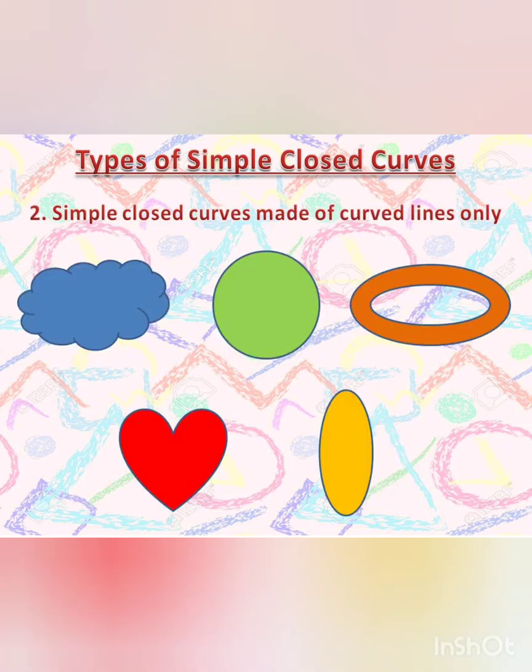Now let's talk about simple closed curves made of curved lines only. As you can observe in the given figures, they are closed and they do not have any straight lines. They are made up of curved lines only.